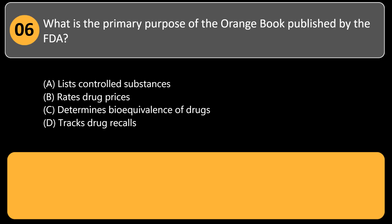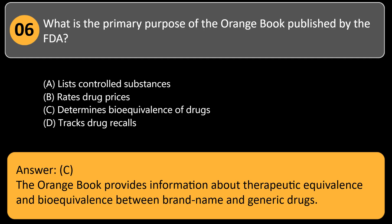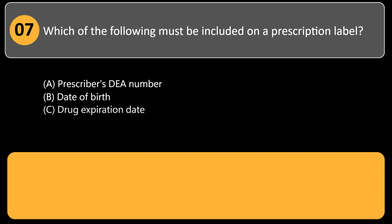What is the primary purpose of the Orange Book published by the FDA? A) lists controlled substances, B) rates drug prices, C) determines bioequivalence of drugs, D) tracks drug recalls. Answer: C. The Orange Book provides information about therapeutic equivalence and bioequivalence between brand name and generic drugs.